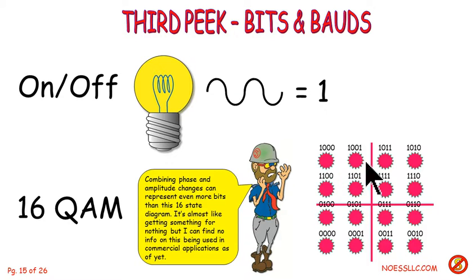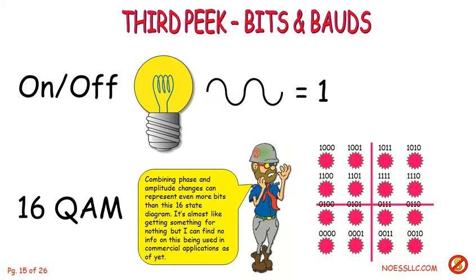We've been doing this forever in our wire systems, in our old modems — we started doing this way back in the sixties using phase and amplitude. I've been looking and looking to see if in fact there are any commercial systems in fiber optics that do this, that use 16-QAM. I know they've got lots of them in labs, but I haven't been able to find any place that specifically states they're doing QAM on fiber optic systems commercially.